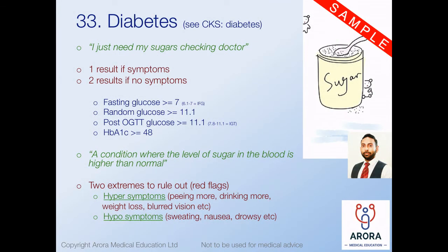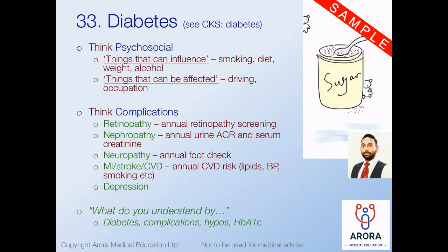In any diabetes scenario in the CSA, make sure you rule out the two extremes: hyper symptoms and hypo symptoms - missing these means the case isn't clinically safe regardless of how well you cover other things. Hyper symptoms: peeing more, drinking more, weight loss, change in vision. Hypo symptoms: feeling sweaty, nauseous, clammy, drowsy. There's a strong psychosocial element in diabetes - certain things influence the condition: smoking, diet, weight, alcohol. And the condition can influence certain things in their life too, like driving and occupation.